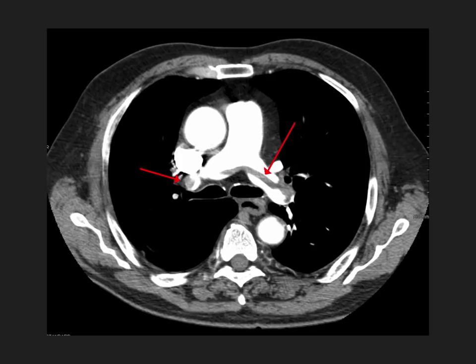Here's our first abnormal CT. You see the arrow pointing to something — what's going on here? Pause the video if you need more time. What we're seeing here is a pulmonary embolus, specifically a saddle embolus. It's called a saddle embolus because it kind of saddles itself over the pulmonary vasculature right at the bifurcation of the pulmonary vessels.